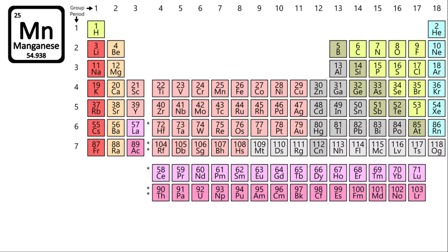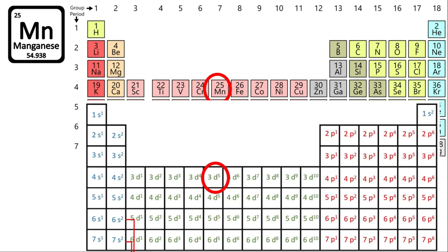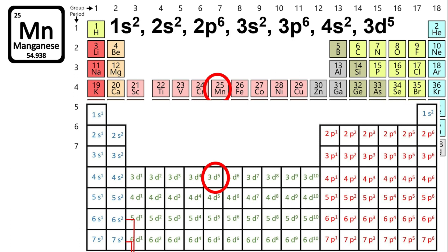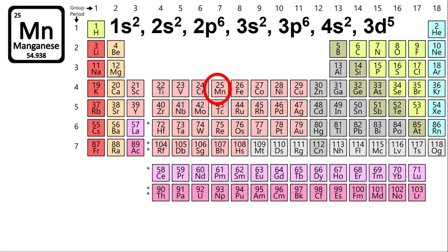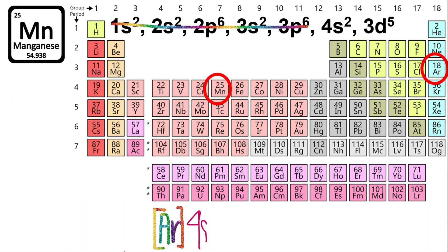For manganese, use the periodic table. Look up manganese in the electron configuration table and copy it: 1s2 2s2 2p6 3s2 3p6 4s2 3d5. There is also a shorthand form called the shorthand electron configuration. Find the noble gas before the element — the closest noble gas to manganese is argon. Write [Ar], then copy the remaining configuration: 4s2 3d5.